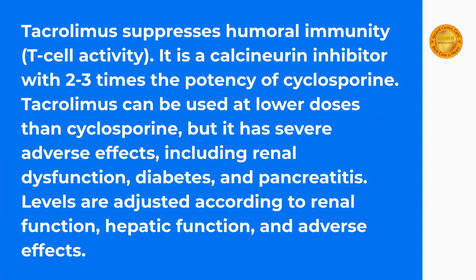Tacrolimus suppresses humoral immunity and T-cell activity. It is a calcineurin inhibitor with 2–3 times the potency of cyclosporine. Tacrolimus can be used at lower doses than cyclosporine, but it has severe adverse effects including renal dysfunction, diabetes, and pancreatitis. Levels are adjusted according to renal function, hepatic function, and adverse effects.